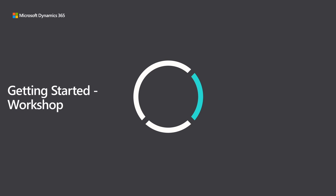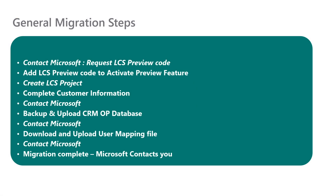Now that you've completed your prerequisites, we will go over how to get started with your first migration project. To get started, follow these steps: first, request an LCS preview code; then add the LCS preview code to activate the preview feature; once done, create an LCS project; complete the customer information in LCS; and then reach out to the Microsoft Factory team letting them know you are done.